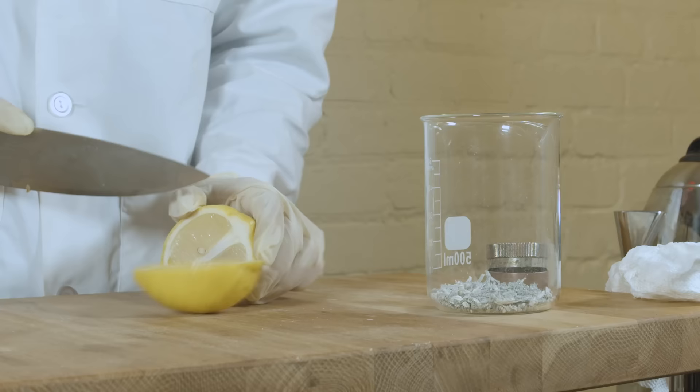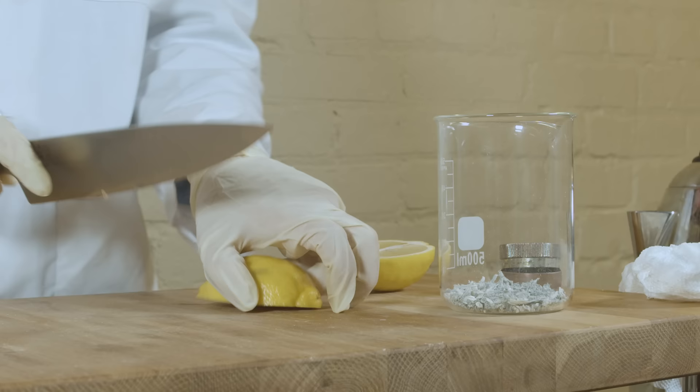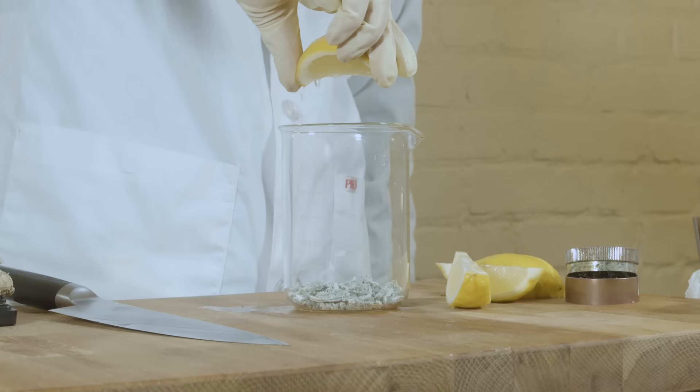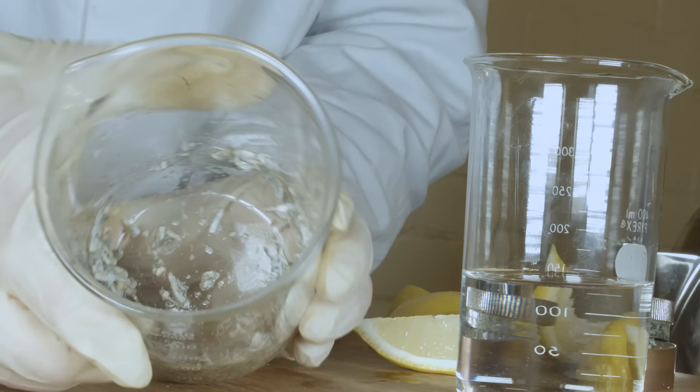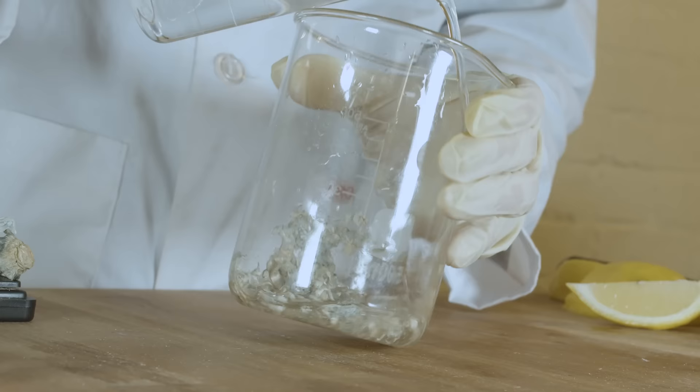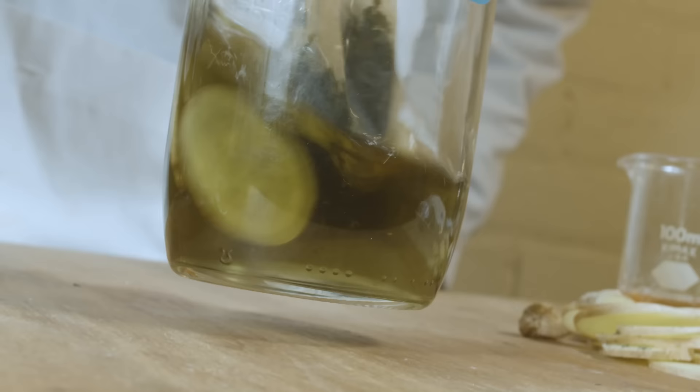We only need to convert maybe 10 or 20 milligrams into psilocybin. Just one lemon slice has plenty enough acidity to convert this amount. I'll start by squeezing my lemon slice into the mug. As you can see here, the mushrooms are wet but not soaking. Next, I'll add water so that the acid can travel into all parts of the mushrooms.